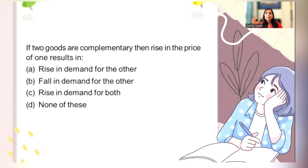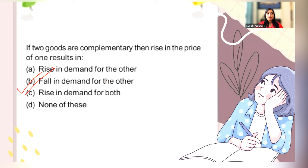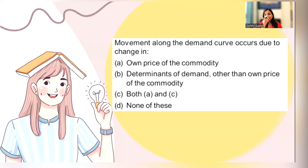Next: if two goods are complementary, then a rise in the price of one results in what for the other? Examples are shoes and socks, or tea and sugar. If the price of tea increases and becomes expensive, then even though sugar demand may remain, the overall combination is more expensive. For people addicted to tea, they will still have one cup anyhow — so that's a different case.